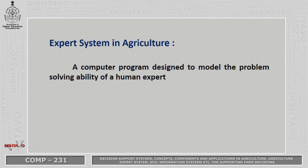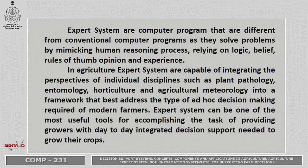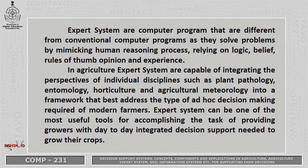Expert systems in agriculture are computer programs designed to model the problem-solving ability of a human expert. They differ from conventional computer programs as they solve problems by mimicking human reasoning processes, relying on logic, belief, rules of thumb, opinion, and experience. In agriculture, expert systems are capable of integrating the perspectives of individual disciplines such as plant pathology, entomology, horticulture, and agricultural meteorology into a framework that best addresses the ad hoc decision making required for modern farmers. Expert systems can be one of the most useful tools for providing growers with day-to-day integrated decision support needed to manage their entire cropping system.